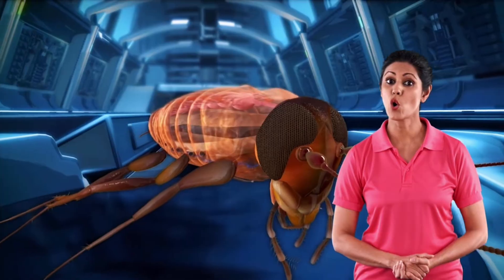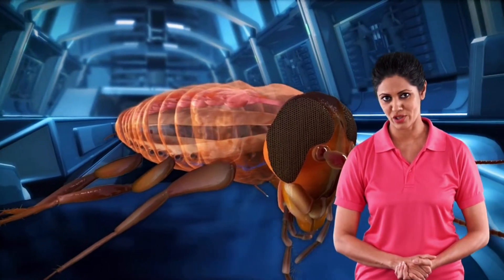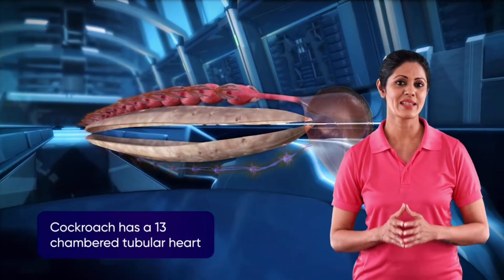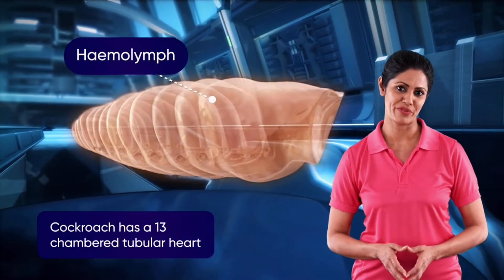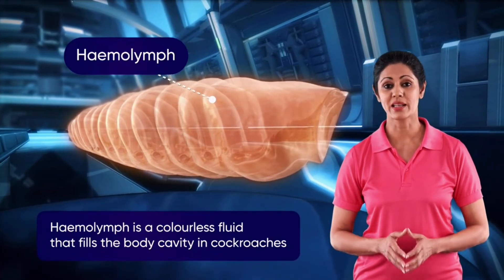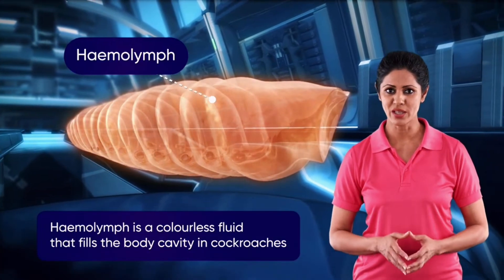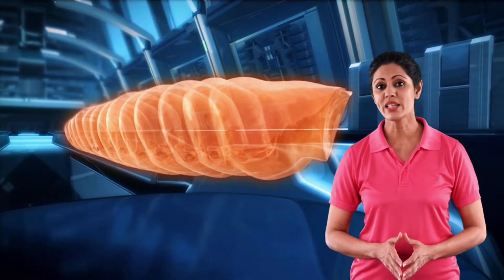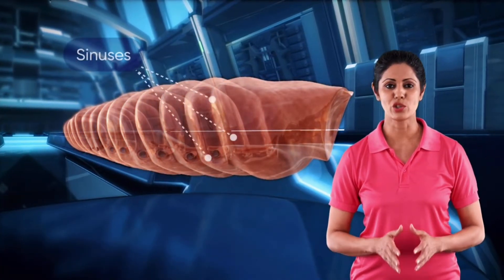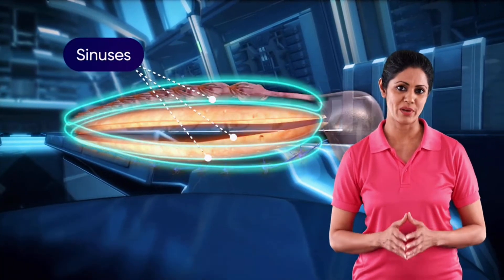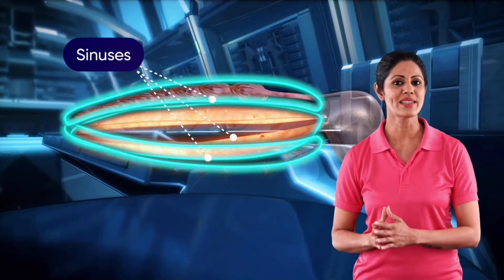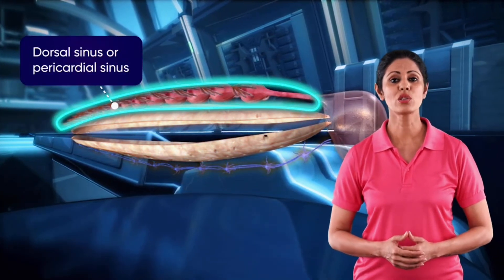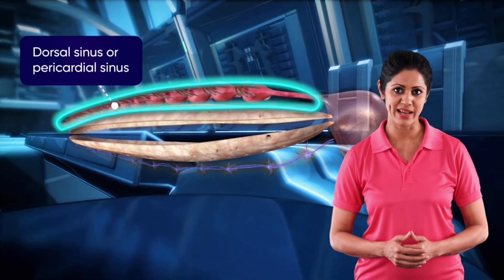Cockroach has an open circulatory system consisting of a heart and the hemolymph. The hemolymph is a colorless fluid that fills the body cavity. The body cavity is divided into three chambers or sinuses: the dorsal sinus, also called the pericardial sinus, as it contains the heart.